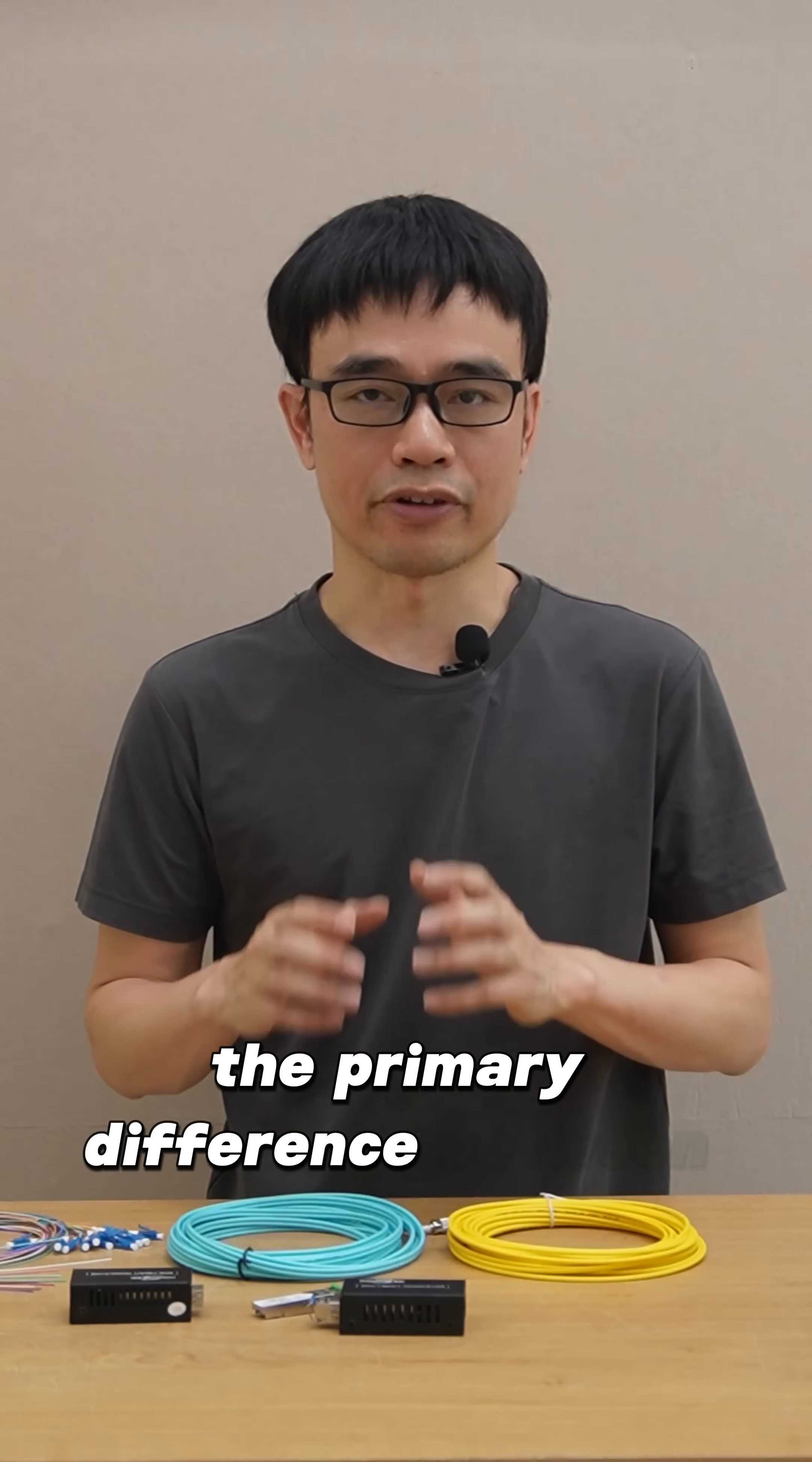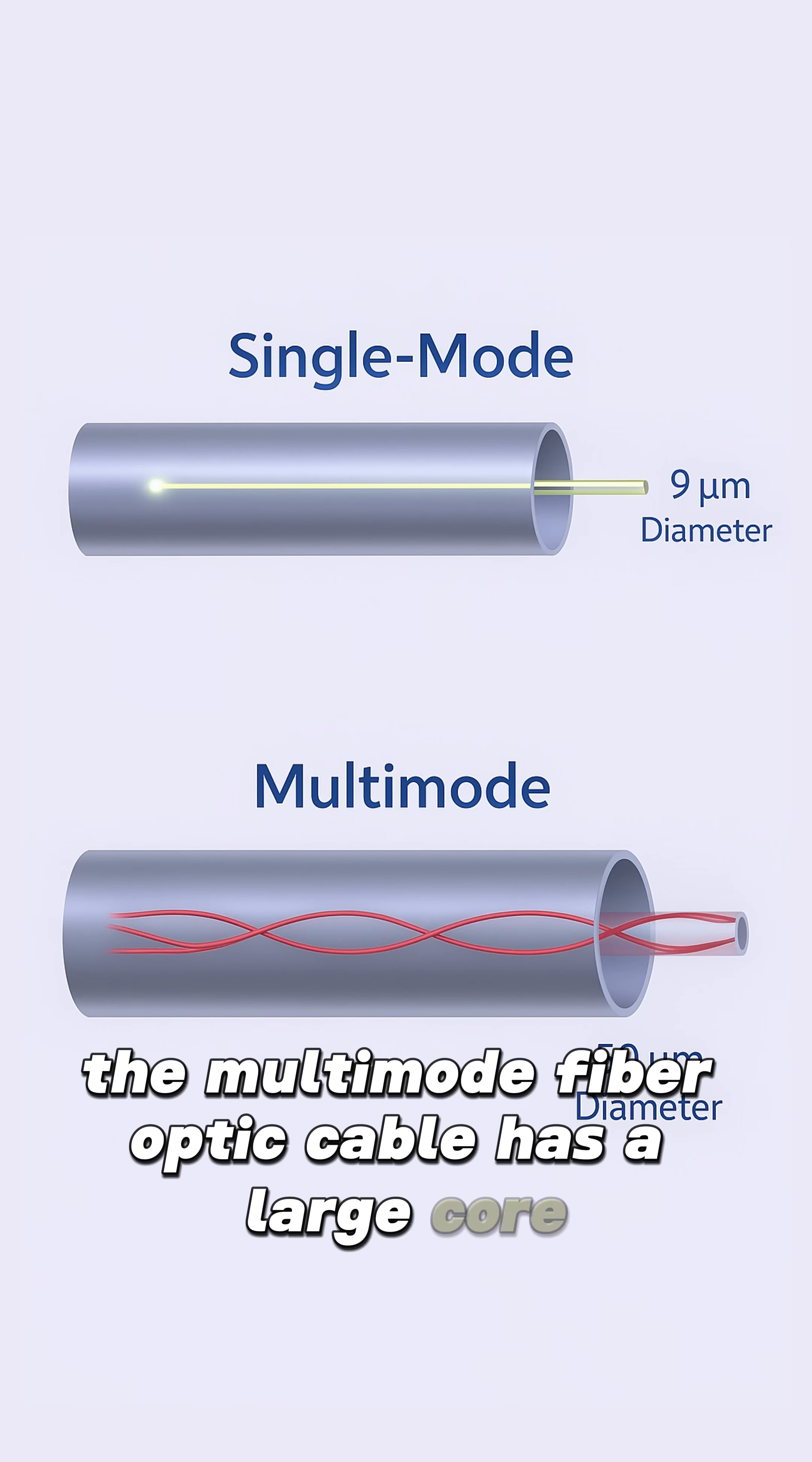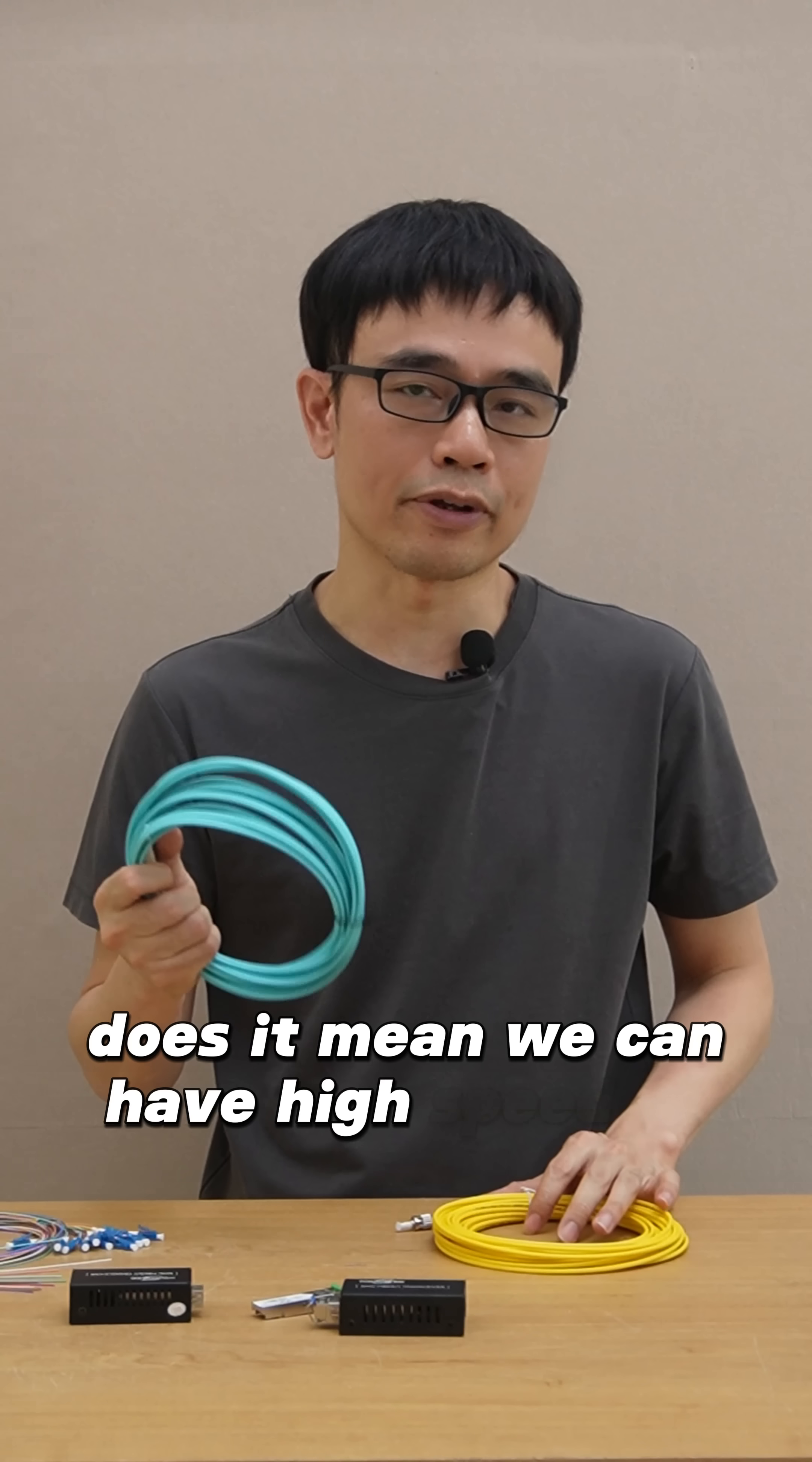The primary difference between these two cables is the multi-mode fiber optic cable has a larger core than the single mode fiber optic cable. Does it mean we can have high speed on the multi-mode fiber optic cable? That's not true.